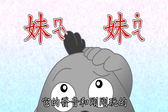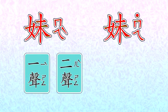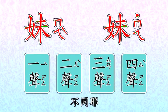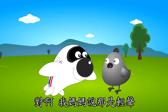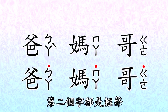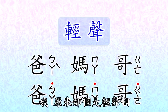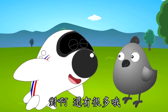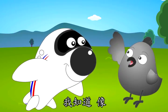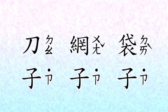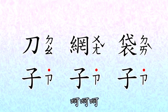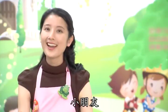妹妹——她的发音和刚刚玩的一声、二声、三声、四声不同耶！对啊，我妈妈说那是轻声。像是爸爸、妈妈、哥哥，第二个字都是轻声哦！原来那个是轻声啊！对啊，还有很多哟，像刀子、网子、带子。